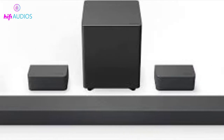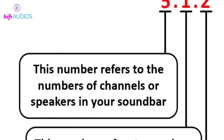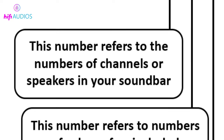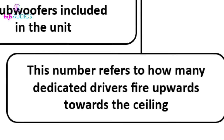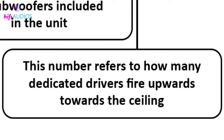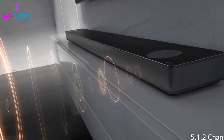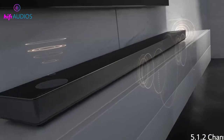Let's first take an example of 5.1.2. The first number refers to the number of channels or speakers in your soundbar. The middle number refers to the number of subwoofers included in the unit. And lastly, the third number is used for Dolby Atmos-enabled speakers, which means you get extra speakers that fire the sound upwards, making it bounce off the ceiling and creating a 3D surround sound to give you a cinematic experience.